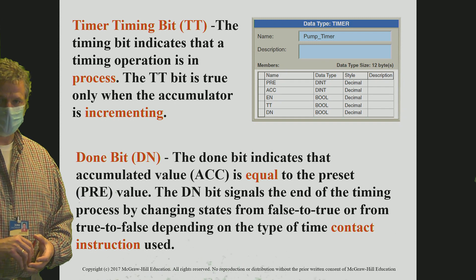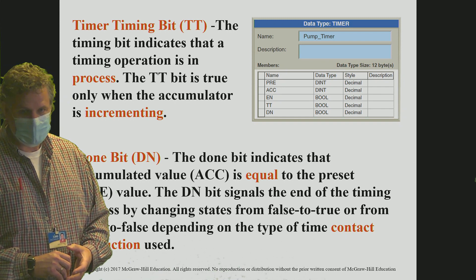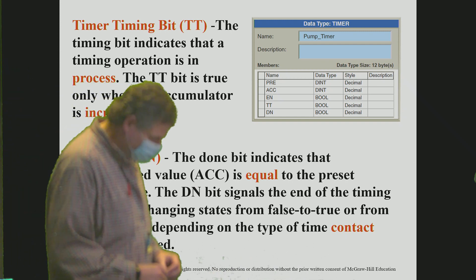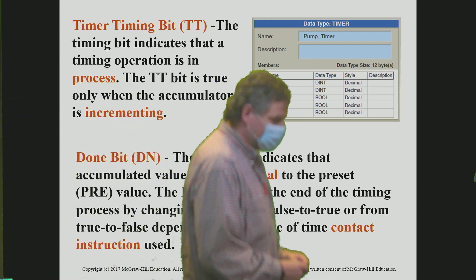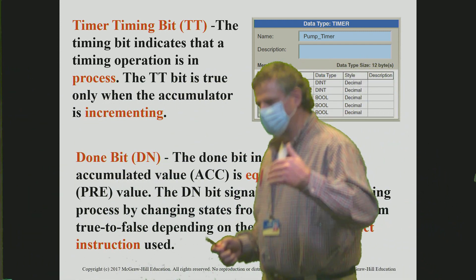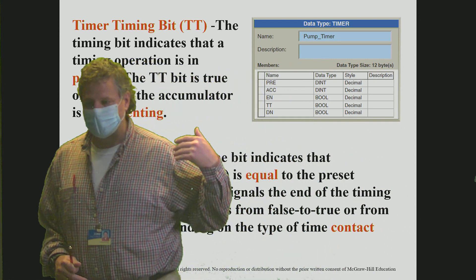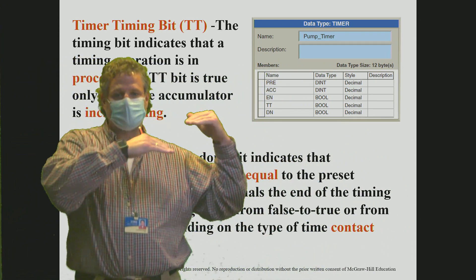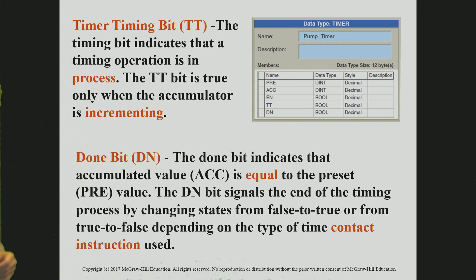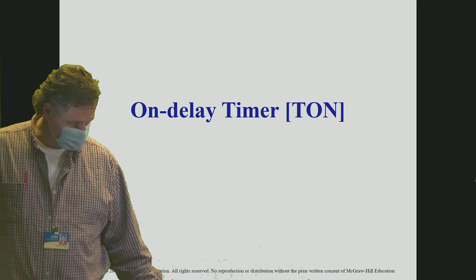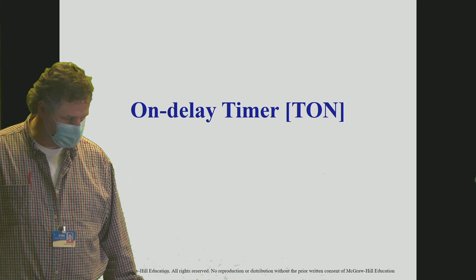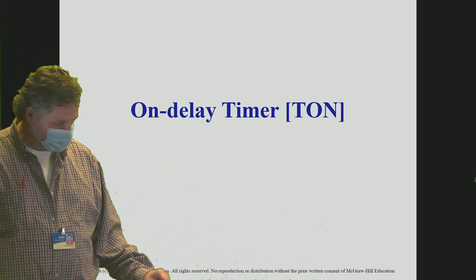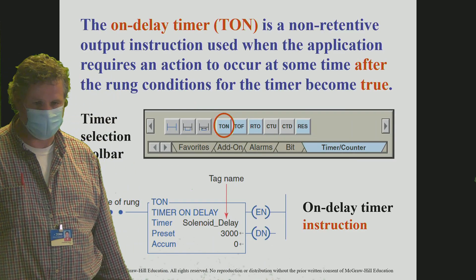The done bit — it equals the preset. Whenever the accumulated value, as it's incrementing, hits the preset value, at that very moment the done bit turns on. So that's the timer-on-delay — the TON — which is what we've been discussing up to this point.